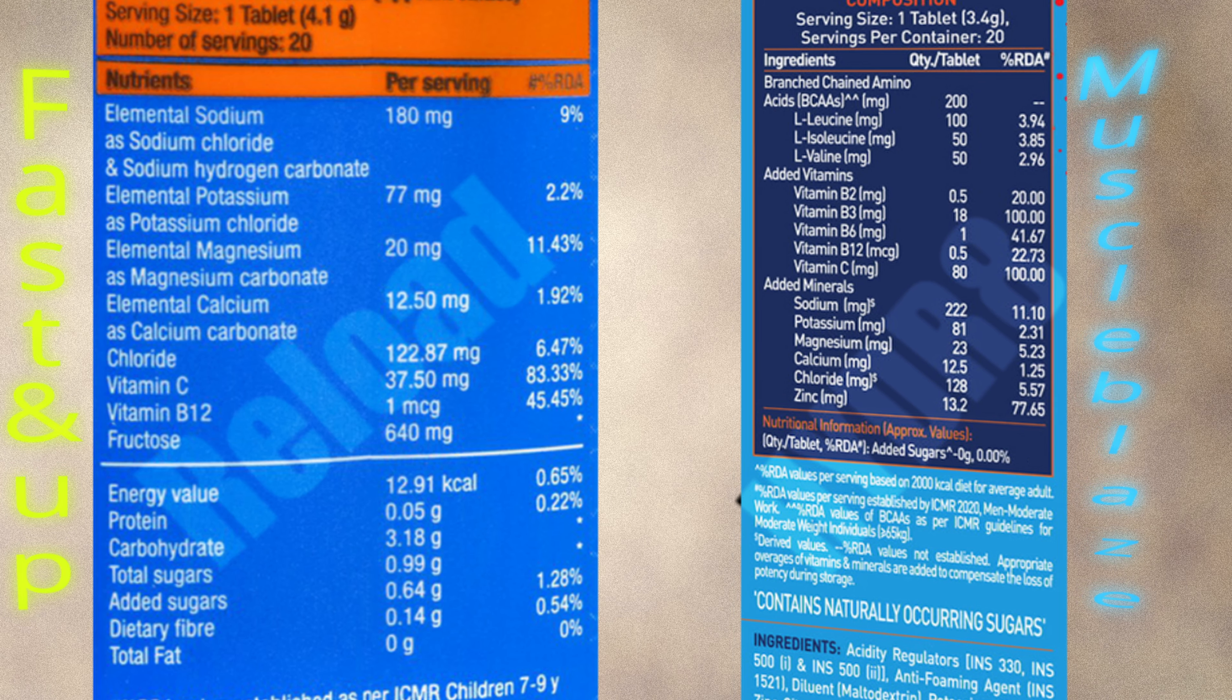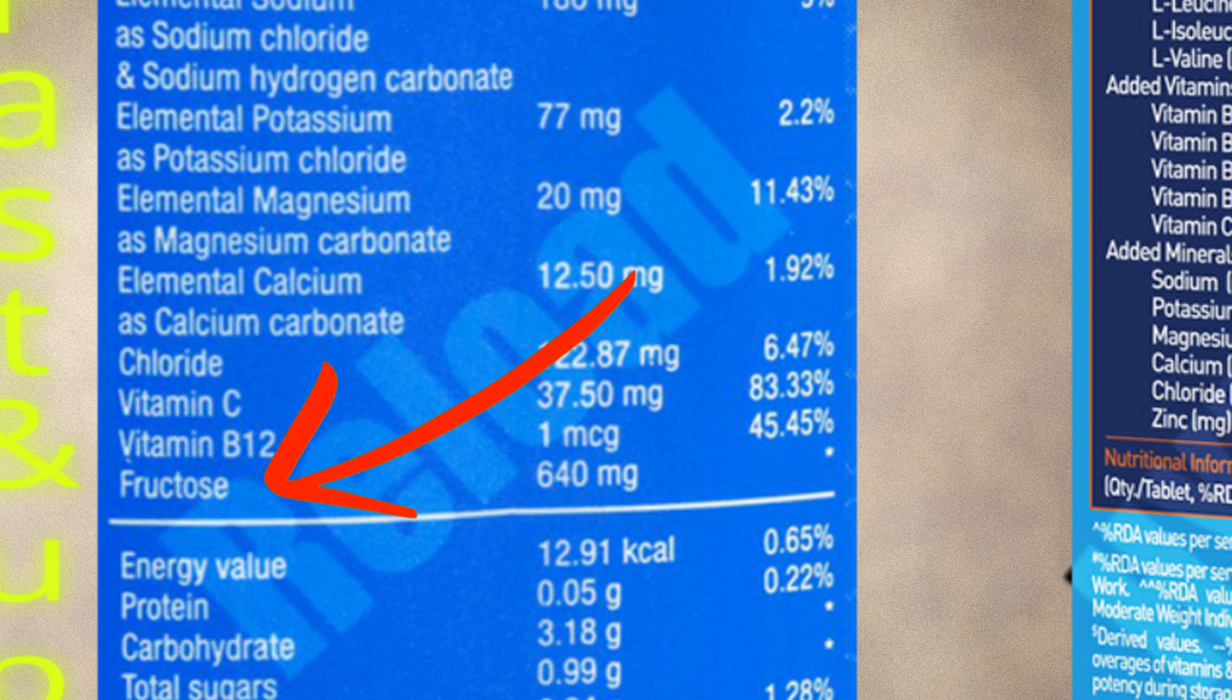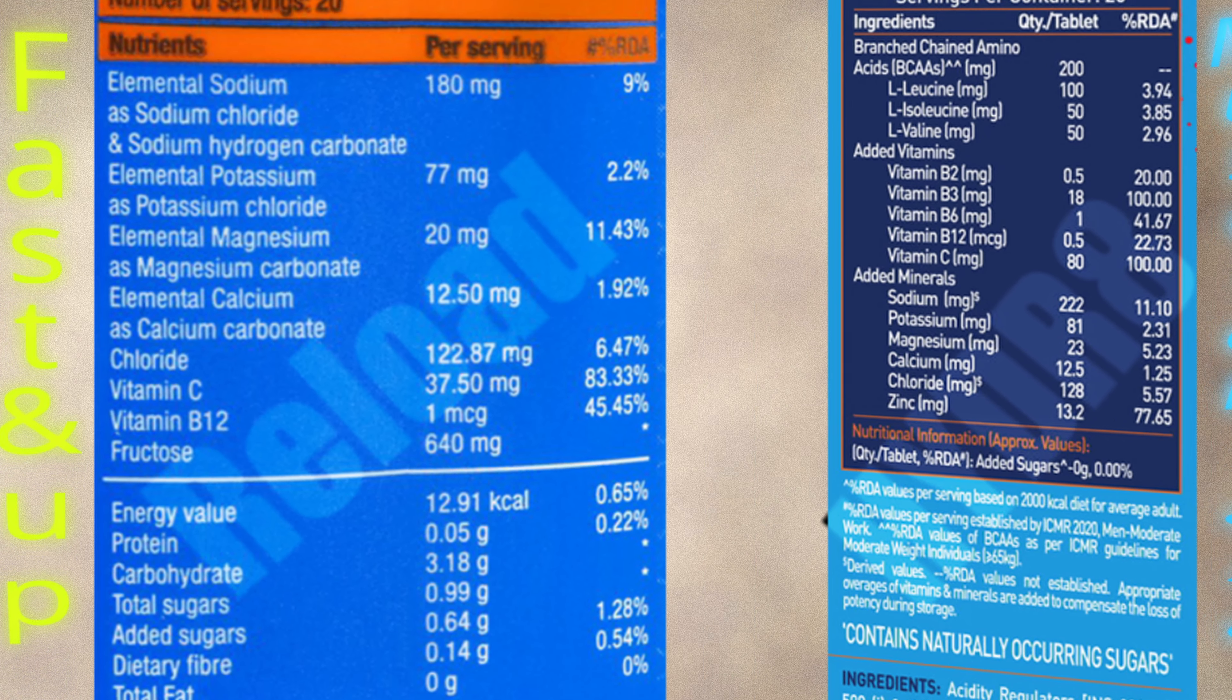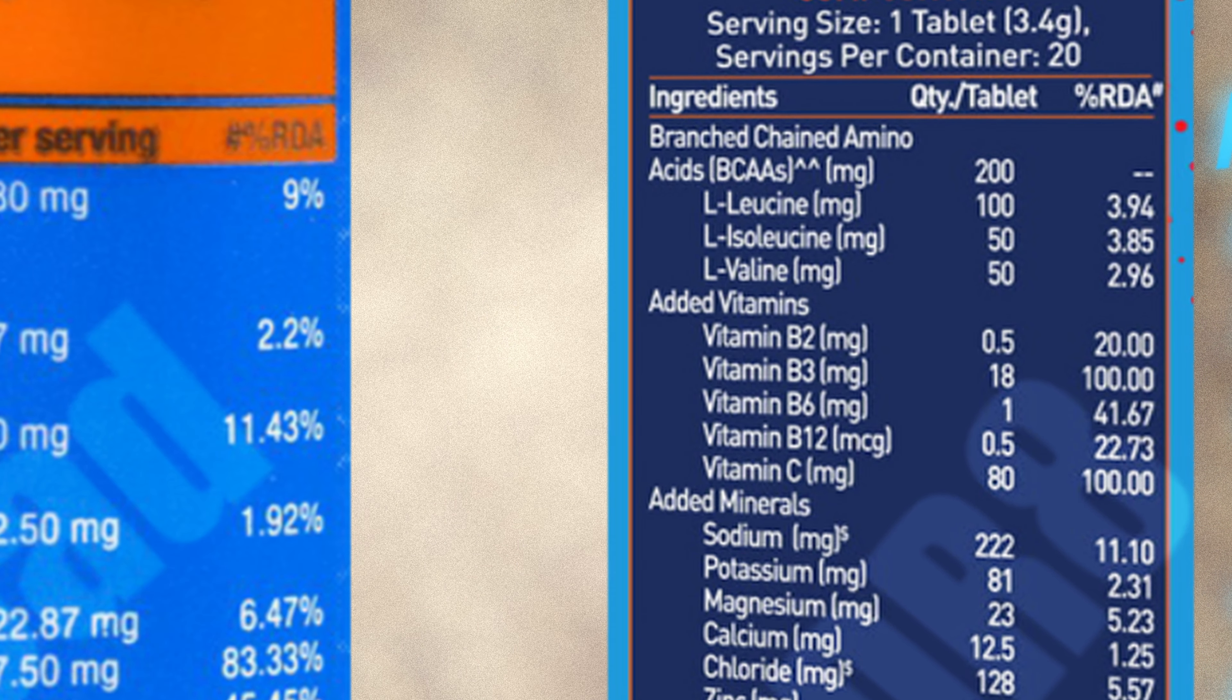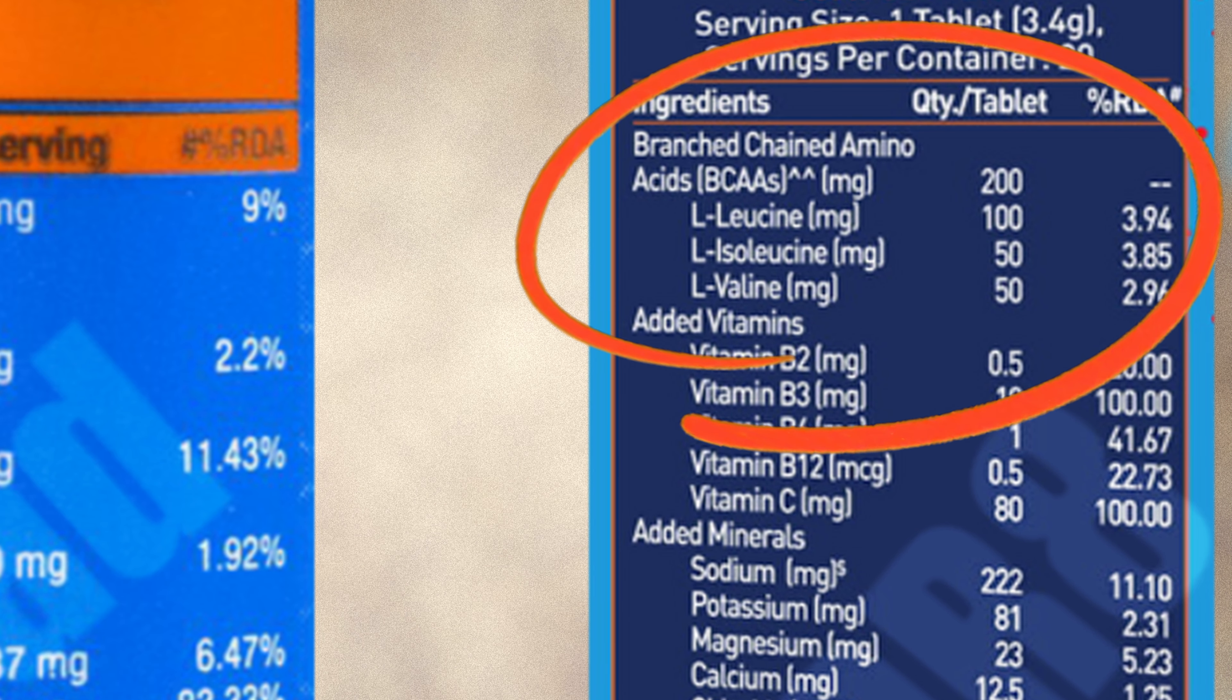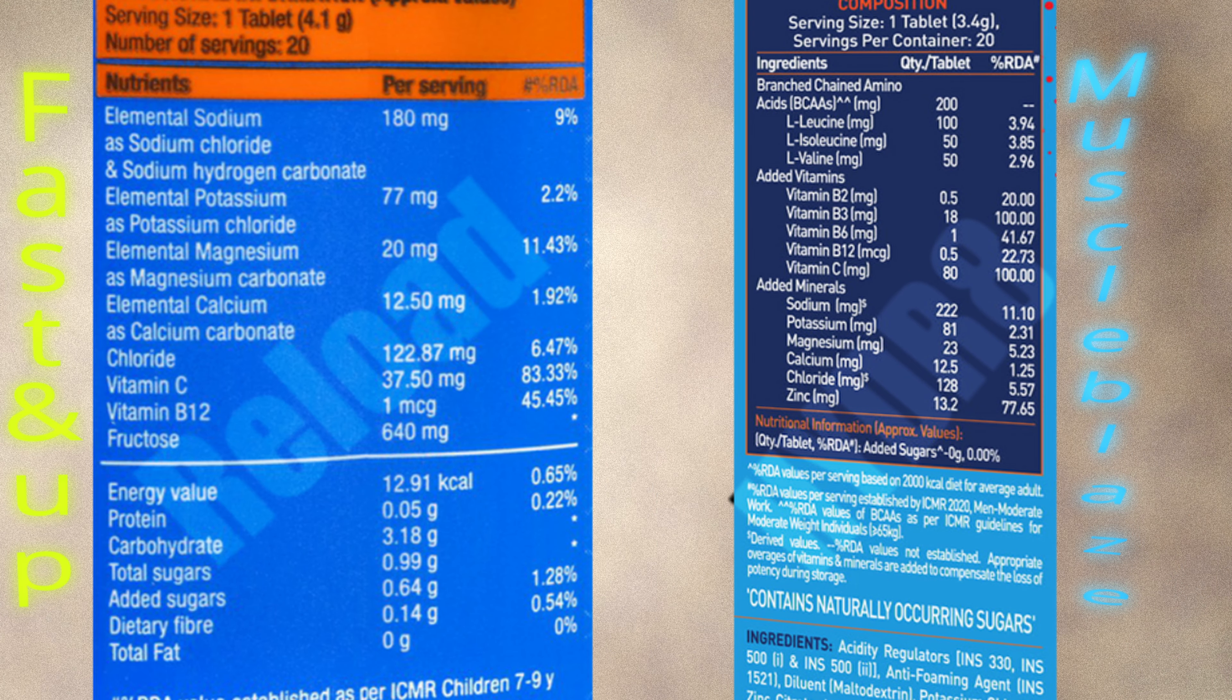In addition, I see that the Fast Up has got fructose in it in minute quantities probably to add to the sweetness. In addition, they have the customary additional ingredients of vitamins and BCAAs which are non-consequential in a rehydration drink if your nutrition is on point. So far between the two, there is nothing to give and take and they are totally even.